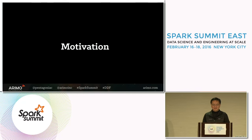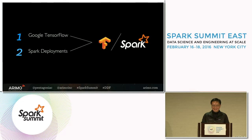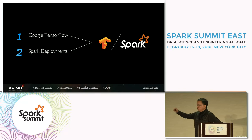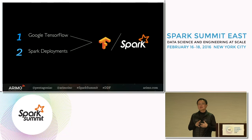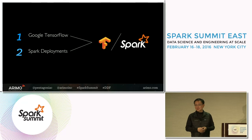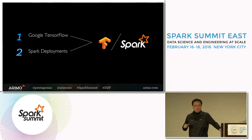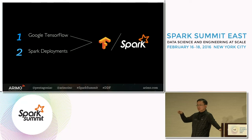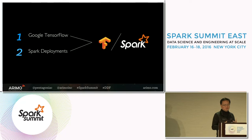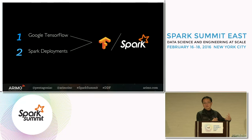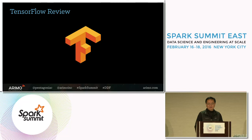The main motivation point: there are people that say Google is going to release a distributed version of TensorFlow — why even bother? In the absolute sense you could ask that question, but the main motivation is that we have customers. This whole summit is about Spark. If you already have a Spark deployment and you want to add one more workload — a deep learning workload — and you want to take advantage of Google TensorFlow, then this is the motivation. This is why we look at TensorFlow on Spark for customers already doing other things with Spark.